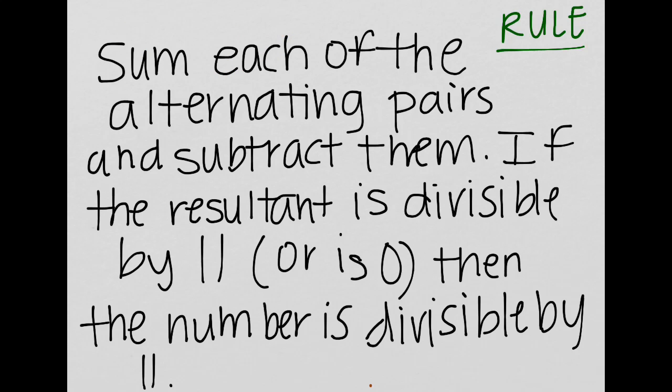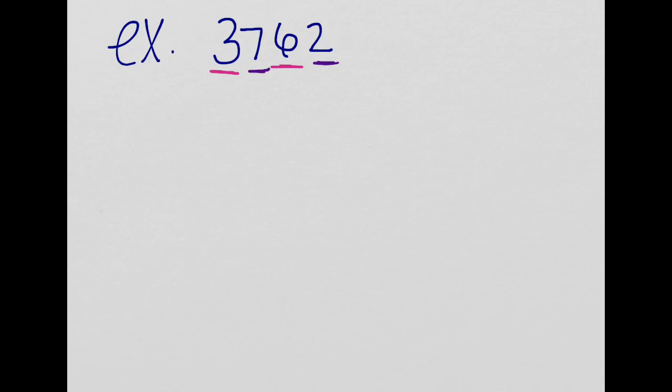So looking back at our rule, we're supposed to sum each of the alternating pairs. So we're going to sum 3 plus 6. So we're going to have 3 plus 6 is equal to 9.